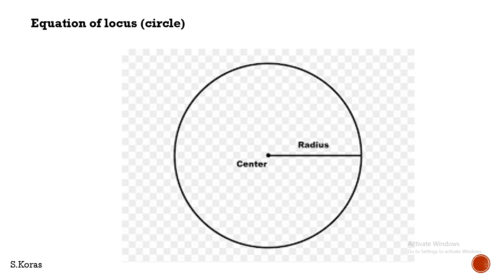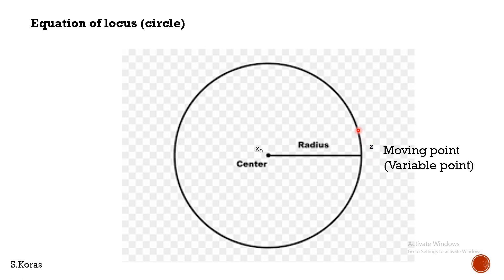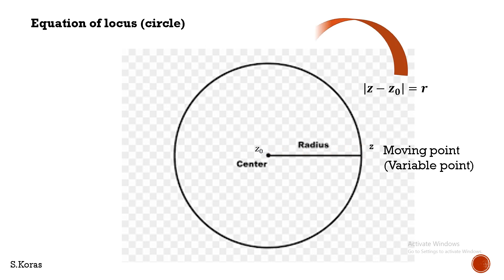This is a circle. The center is denoted by Z₀ and the radius is R. The point on the circumference of the circle is Z, which is a moving point. It moves with the geometric condition that the distance between the center and the moving point should always be equal to the constant R — that is how we get a circle. So the equation of circle is: modulus of Z minus Z₀ equals R.